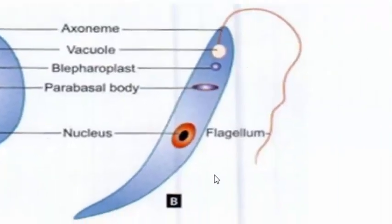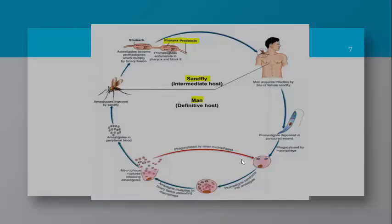The promastigote form of visceral leishmaniasis is a flagellate stage present in the insect vector sand fly. Its length is about 15 to 25 micrometers and width is about 1.5 to 3.5 micrometers. It contains a nucleus at the center, and the flagellum is single, measuring approximately 15 to 28 micrometers.